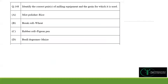Moving ahead to question 148: identify the correct pairs of milling equipment and the grain for which it is used. Mist polisher — we use polishing in the case of rice, and we use a mist polisher or a cone polisher for rice polishing. Hence option A is correct.